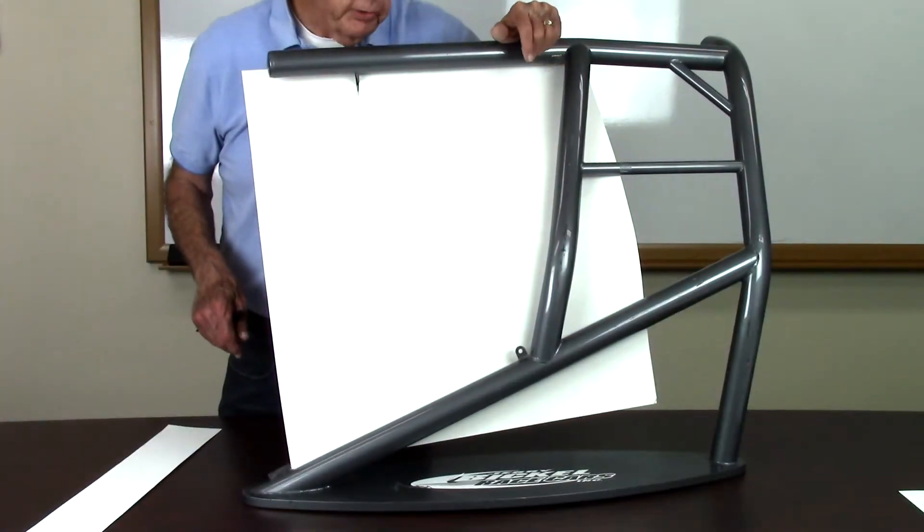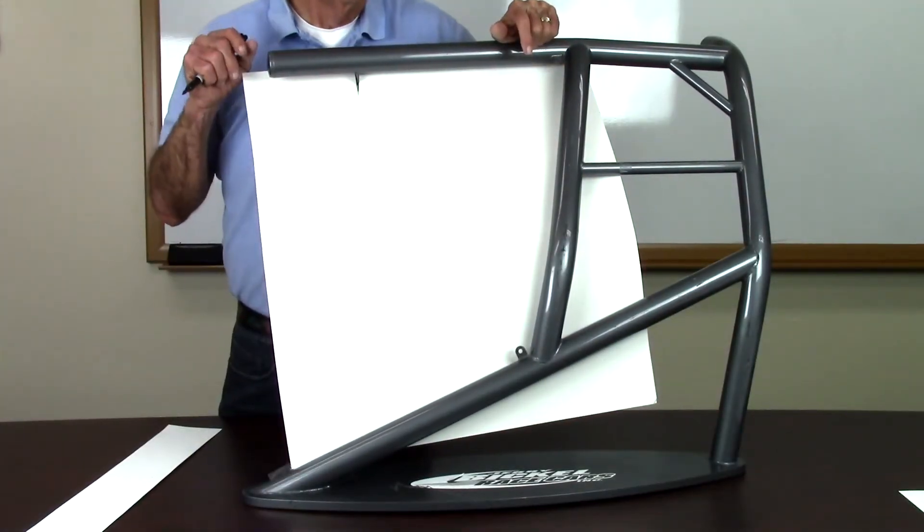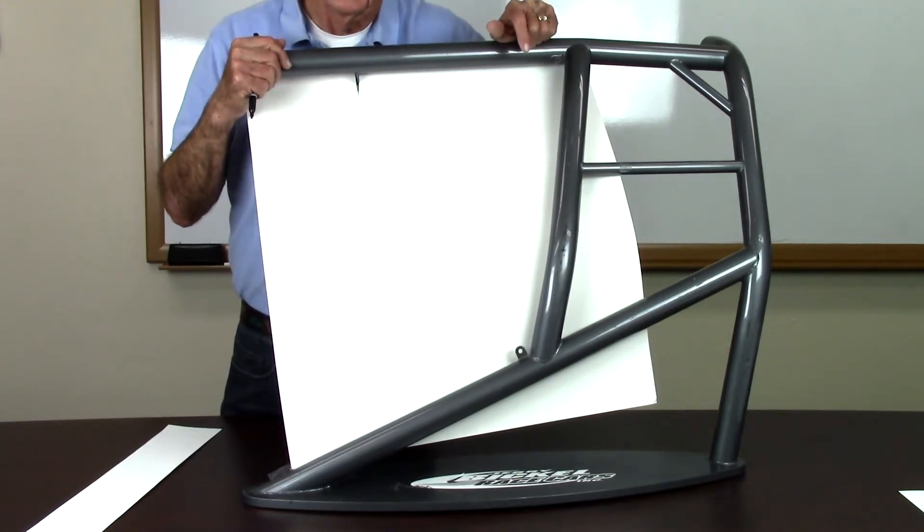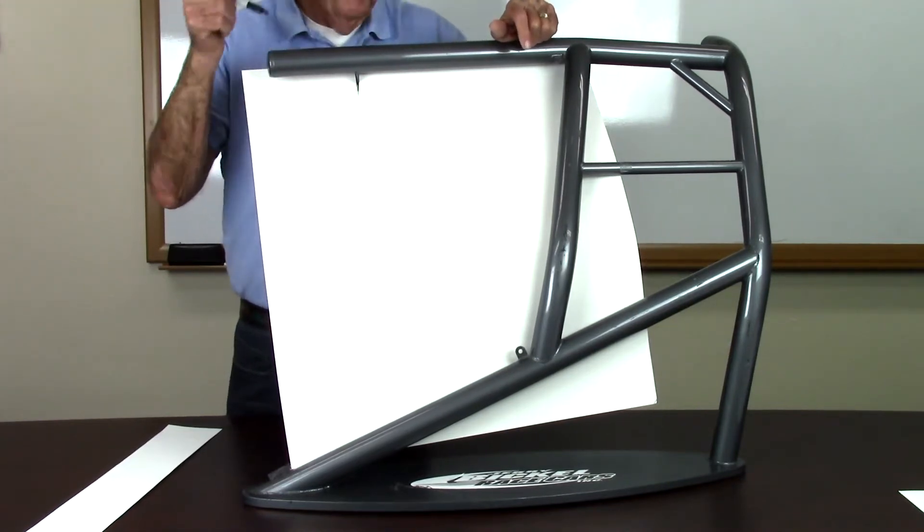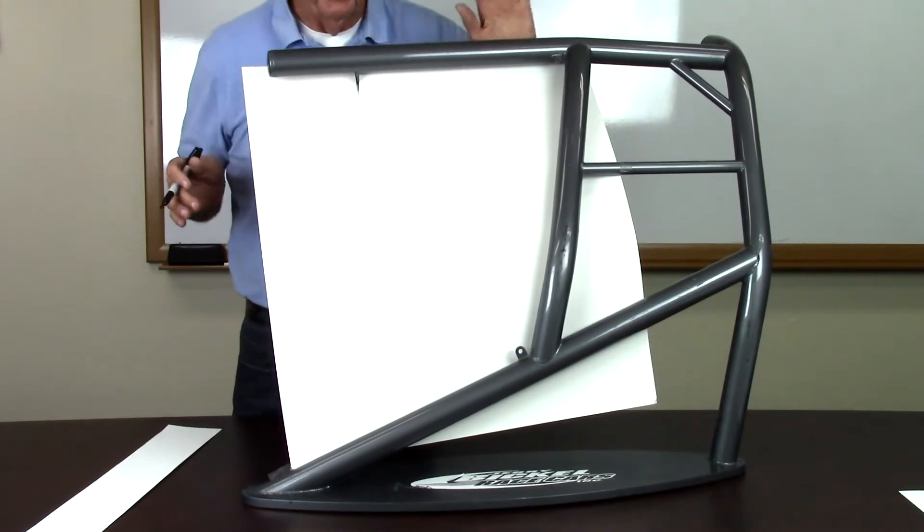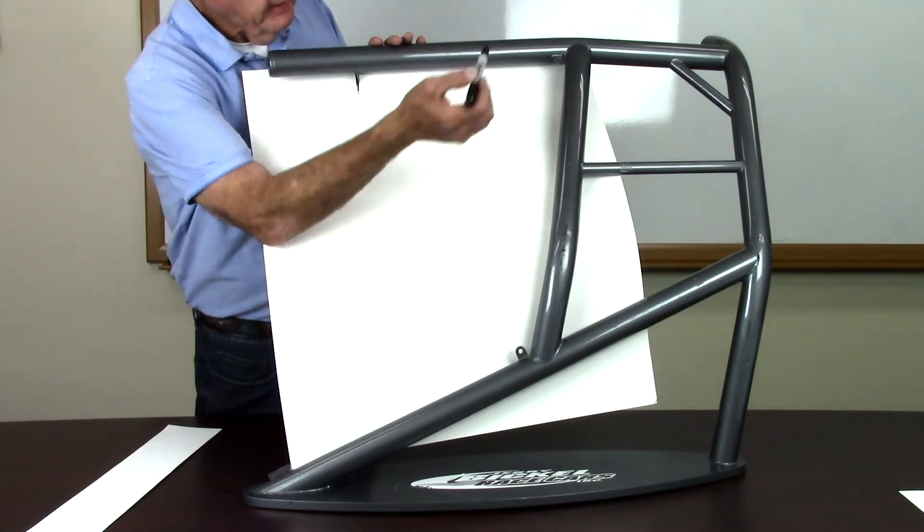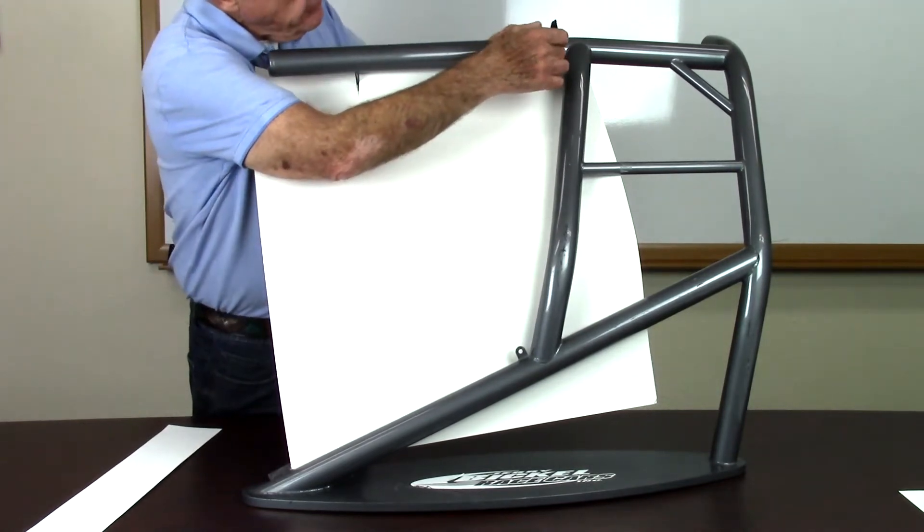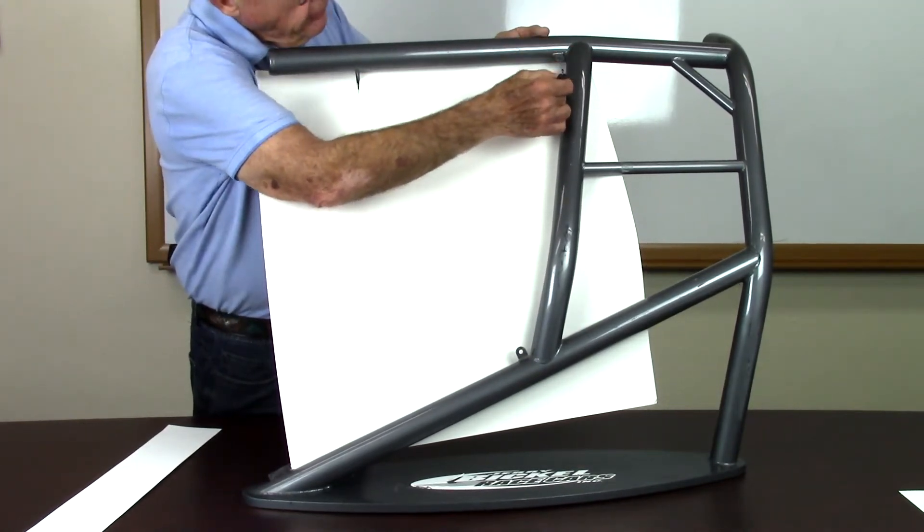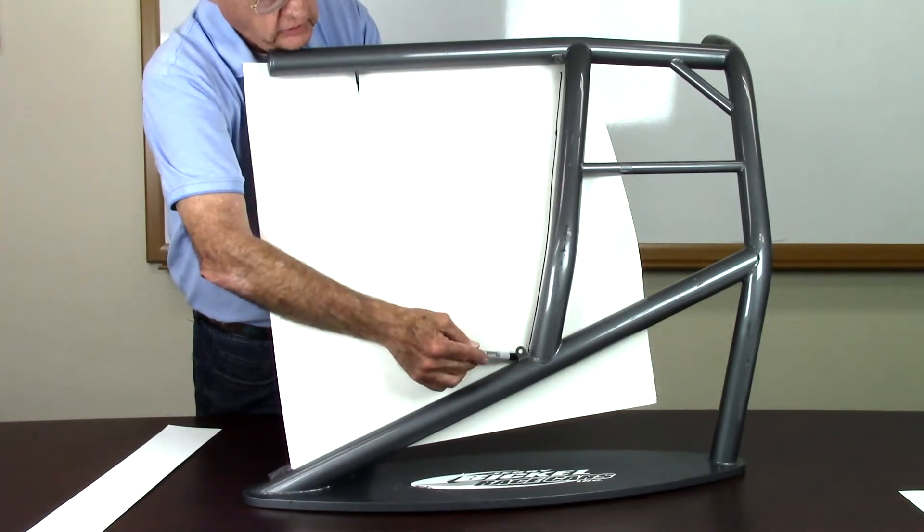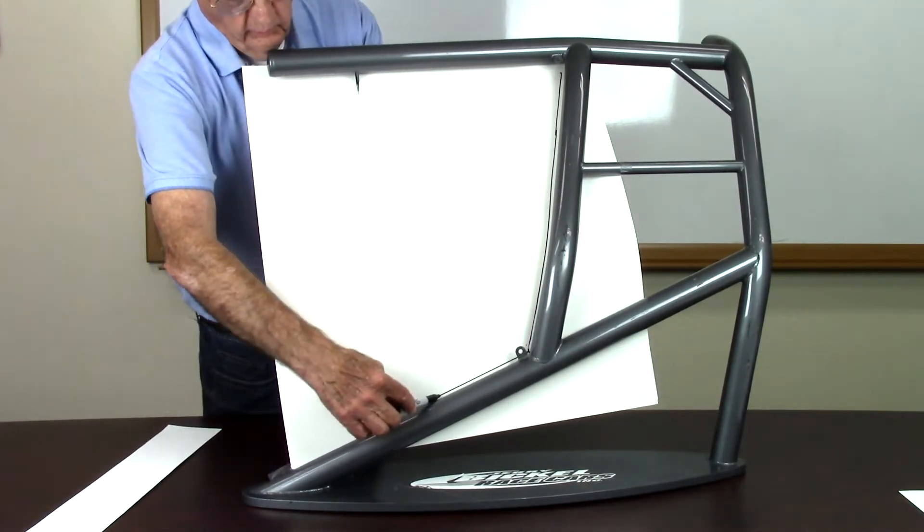To trace the opening for your window net, use butcher paper or lightweight poster board to trace the shape of the net for your application. We're using lightweight poster board in this example. Tape the poster board to the inside of the roll cage opening on the driver's side of the vehicle. From the outside, trace along the top, back and bottom inside edge of the opening.